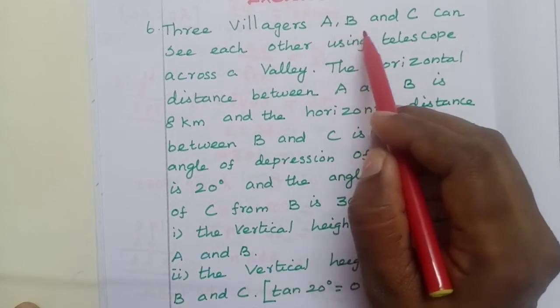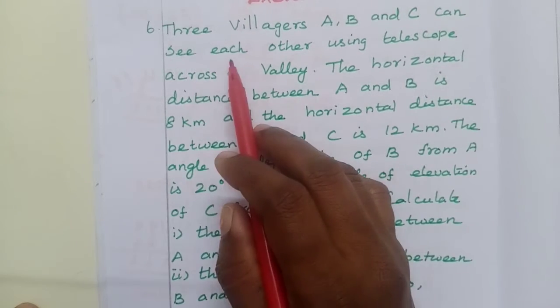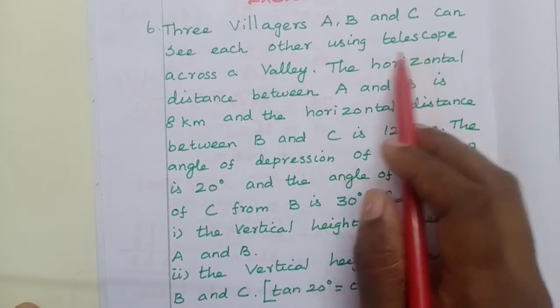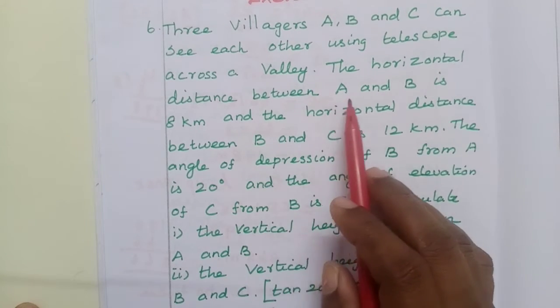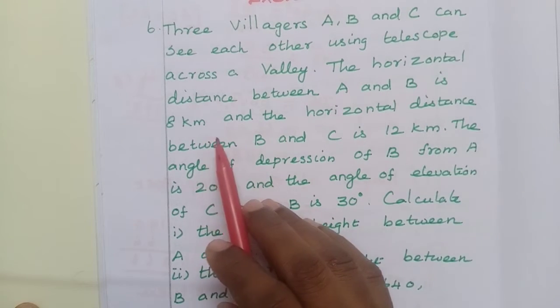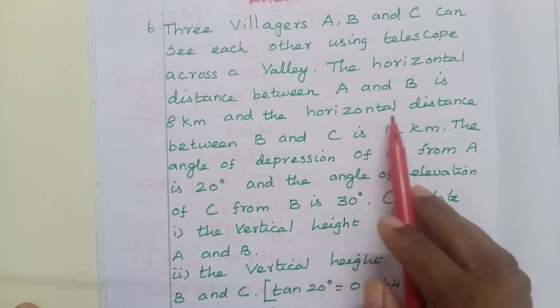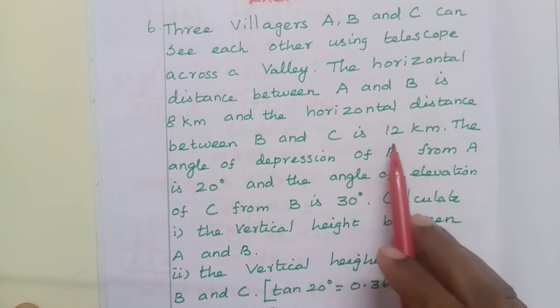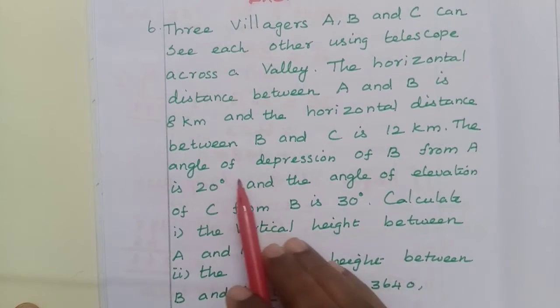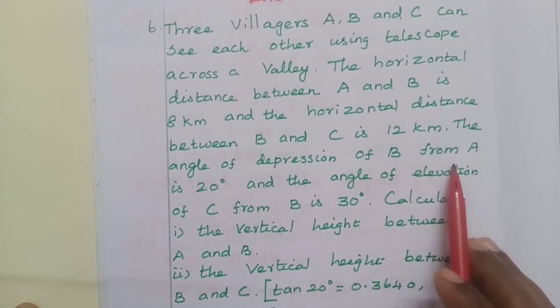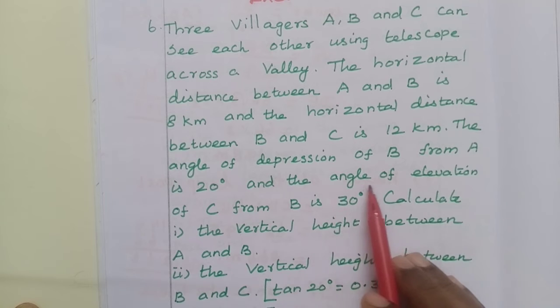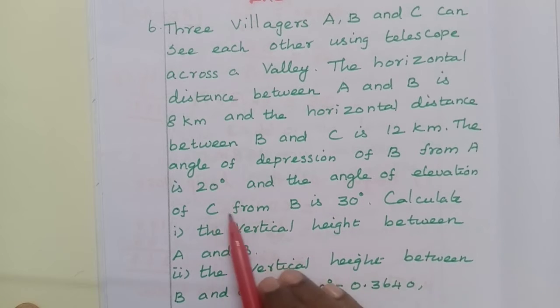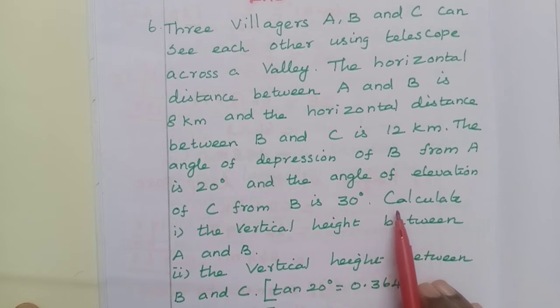Three villages A, B and C can see each other using telescope across a valley. The horizontal distance between A and B is 8 km and the horizontal distance between B and C is 12 km. The angle of depression of B from A is 20 degrees and the angle of elevation of C from B is 30 degrees.